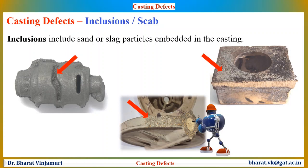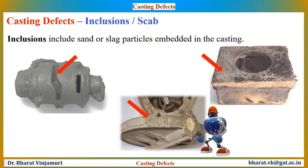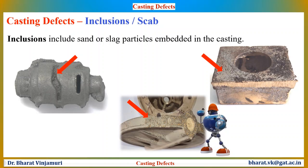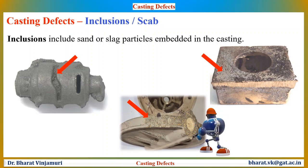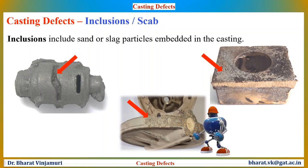Inclusions include sand or slag particles embedded in the castings. Slag inclusion is caused when molten metal containing slag particles is poured into the mould cavities and solidifies. To avoid inclusions, remove slag particles from the molten metal before pouring it into the mould cavity. One can remove the slag by melting the metal with a flux in an inert atmosphere. Also, the slag can be removed by adding ingredients to the mixture to cause slag to float up to the top where it can easily be removed.